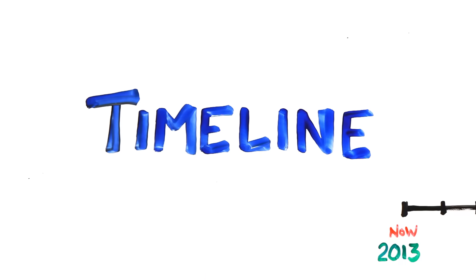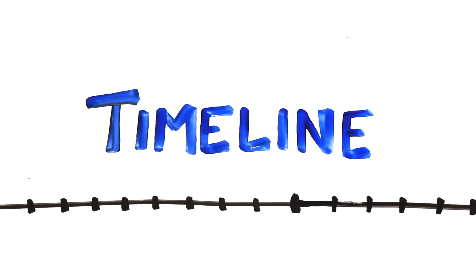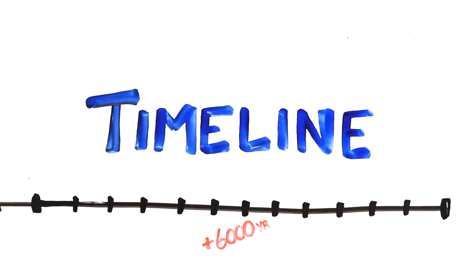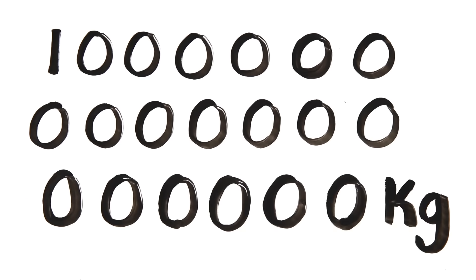In order to move the Earth within our billion-year timeline, we would need approximately one encounter every 6,000 years using an object with a mass of approximately 10 to the 19 kilograms. That's 19 zeros, somewhere around the size of a 100-kilometer-wide asteroid.